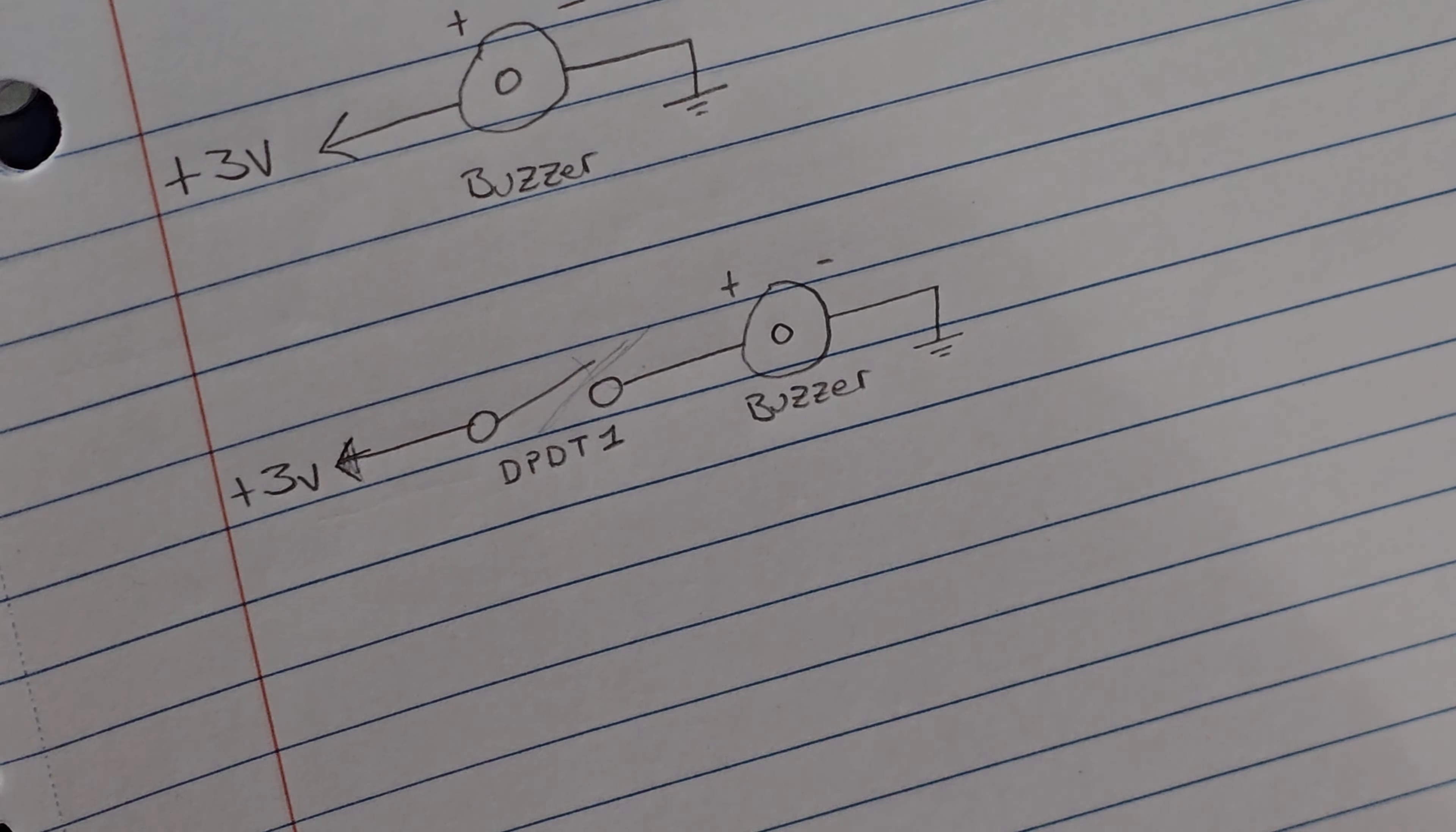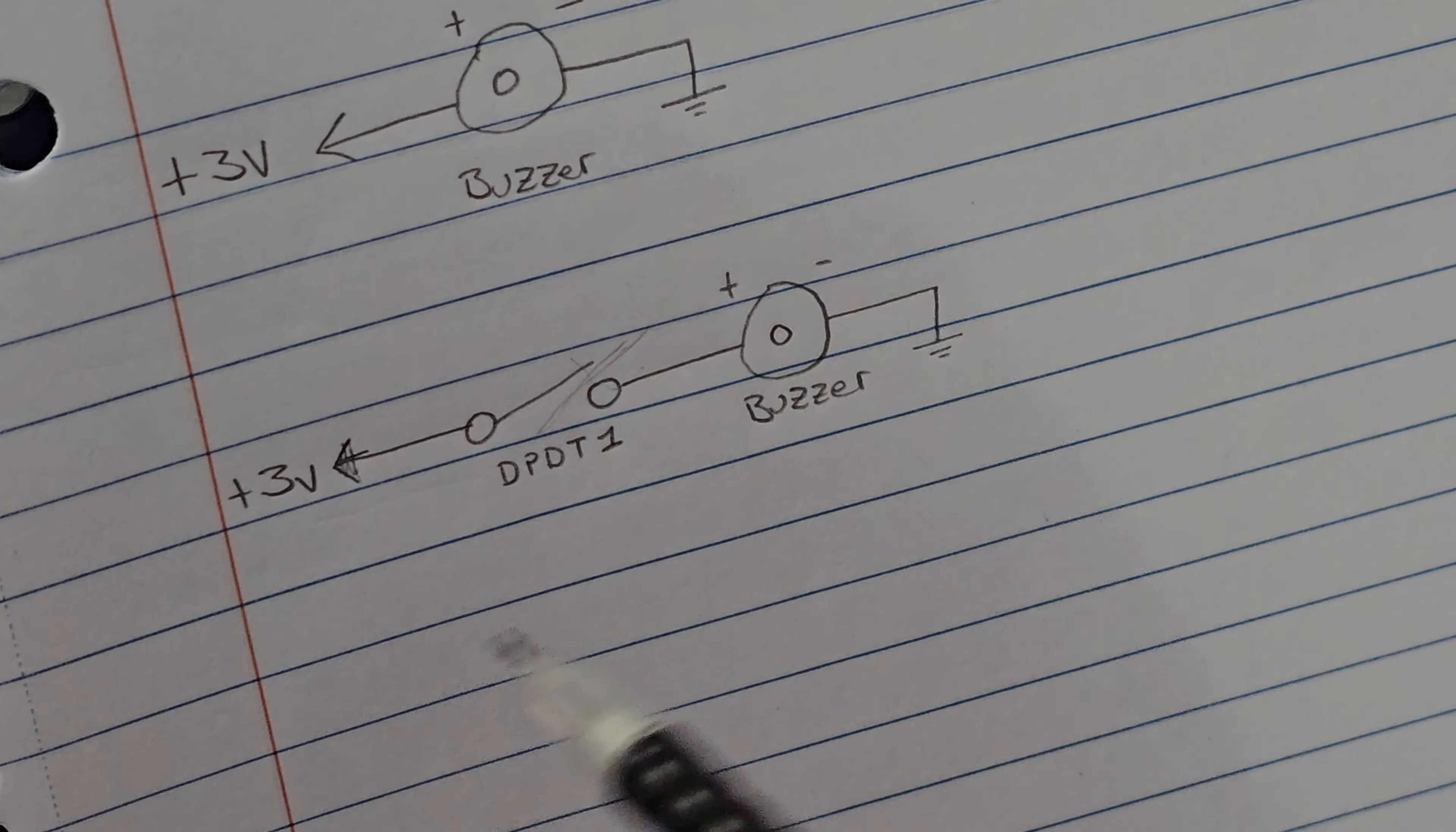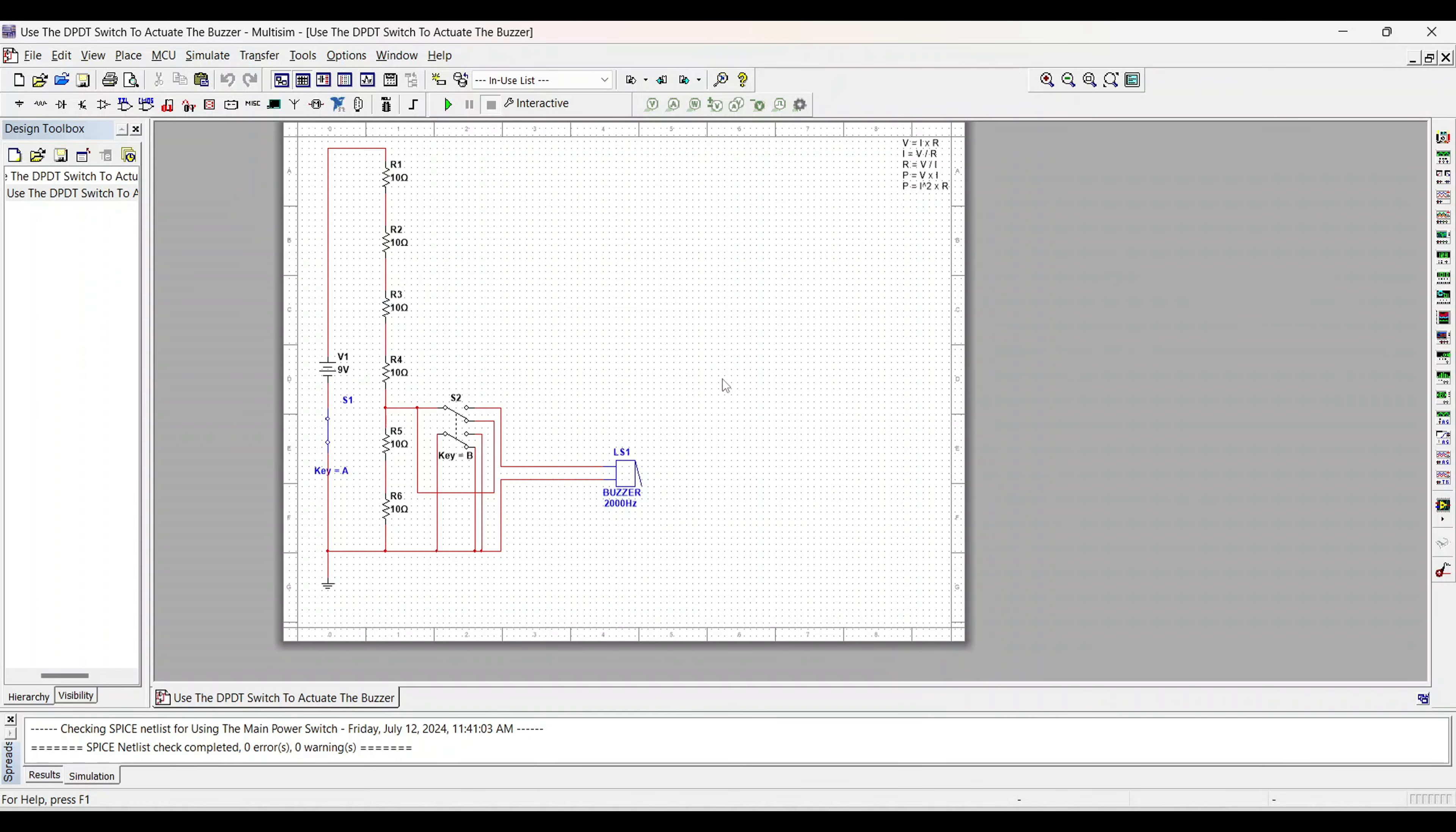The buzzer will not make noise until the main power switch is on and this switch is closed also. So as you can see, if this switch is off we'll have an open and the buzzer will not make noise even though the unit is turned on, but once we close it contact is made and the circuit will be activated.